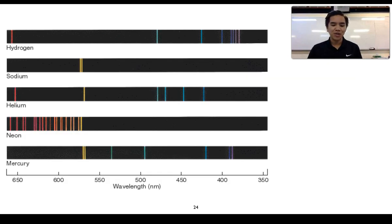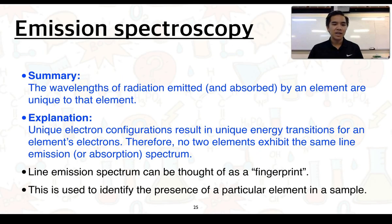This image here shows you the line emission spectra of other various elements that we could use to help identify these particular elements in a sample. In summary the wavelengths of radiation emitted and absorbed by an element are unique to that element. That can be explained by the unique electron configurations result in unique energy transitions for an element's electrons. Therefore no two elements will exhibit the same line emission or absorption spectrum.